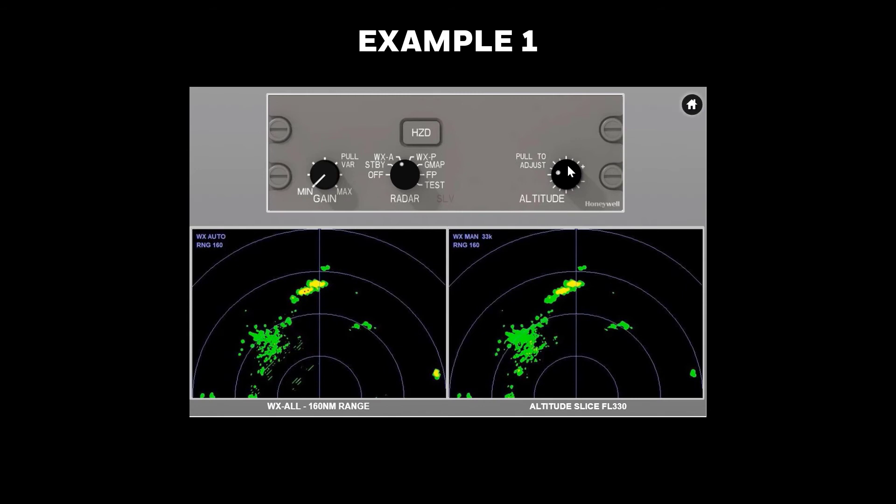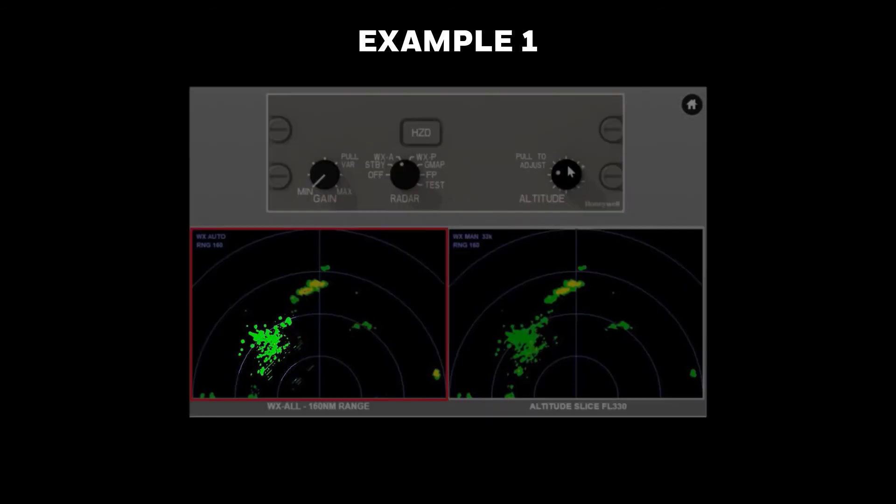As the aircraft gets closer to the weather, the auto mode display shown on the left detects what looks like a patch of stratiform weather on the left side.